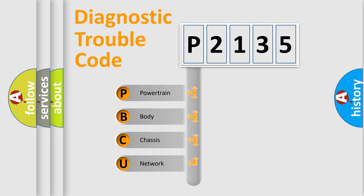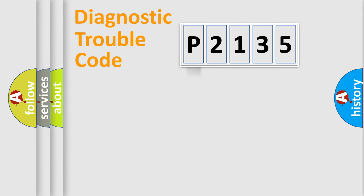We divide the electric system of automobile into four basic units: powertrain, body, chassis, and network. This distribution is defined in the first character code.